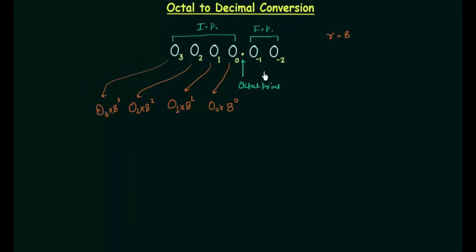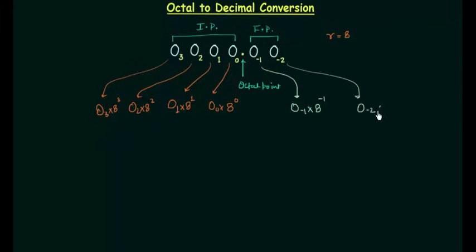In the same way I will multiply O2 by 8 raised to power 2 and O3 by 8 raised to power 3, and O-1 by 8 raised to power minus 1 and O-2 by 8 raised to power minus 2. In order to get the decimal equivalent we have to add them all, and the result is the decimal equivalent of this octal number.